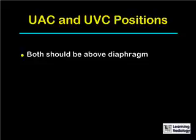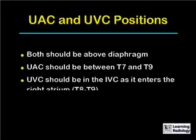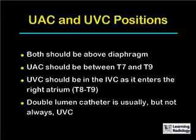To review: both the umbilical arterial catheter and the umbilical venous catheter are usually above the diaphragm. The umbilical arterial catheter is usually between T7 and T9. The umbilical venous catheter should be in the inferior vena cava as it enters the right atrium, approximately at the level of T8 to T9. A double-lumen catheter is usually, but not always, the umbilical venous catheter, depending on what is used at each local institution.